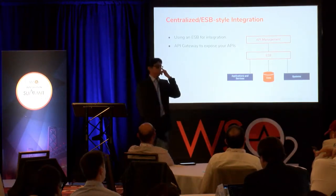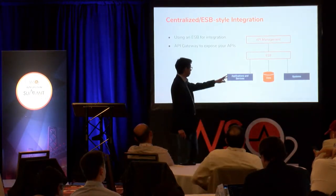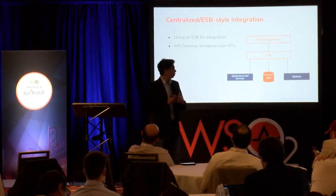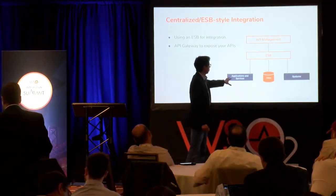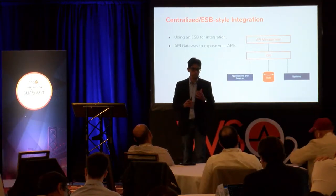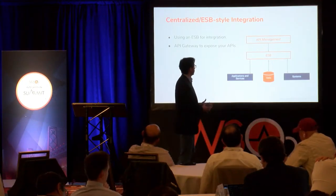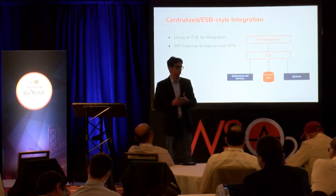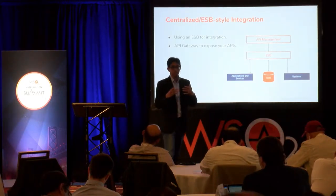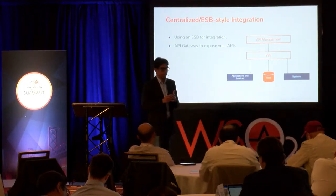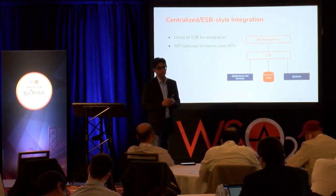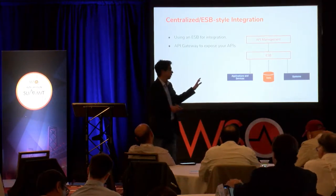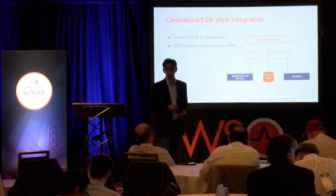We used to do application integration using a central integration layer such as an ESB, connecting services, data, and systems. Developers created compositions at the ESB level. Later, owing to the complexity of the ESB layer, we added an API management layer on top as a facade, simplifying business capabilities and exposing them as managed APIs. This is the typical architecture followed by most existing enterprises that have not moved to microservices.